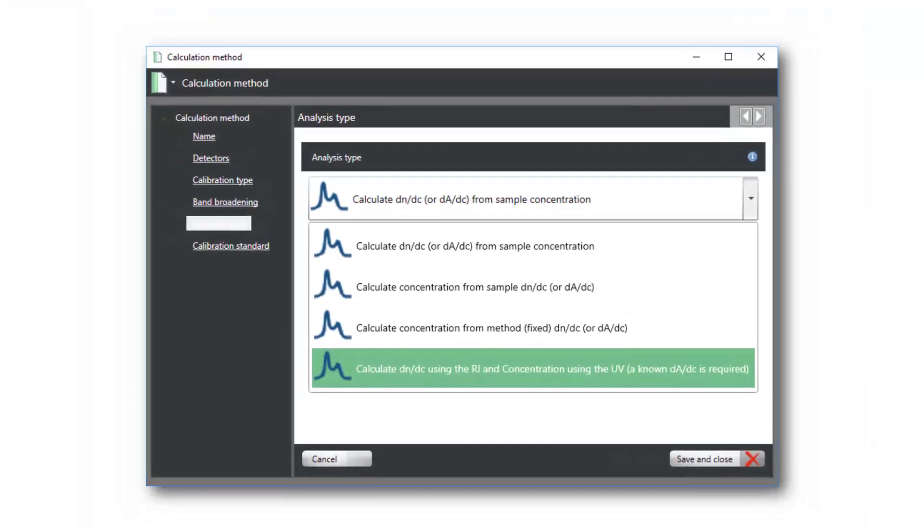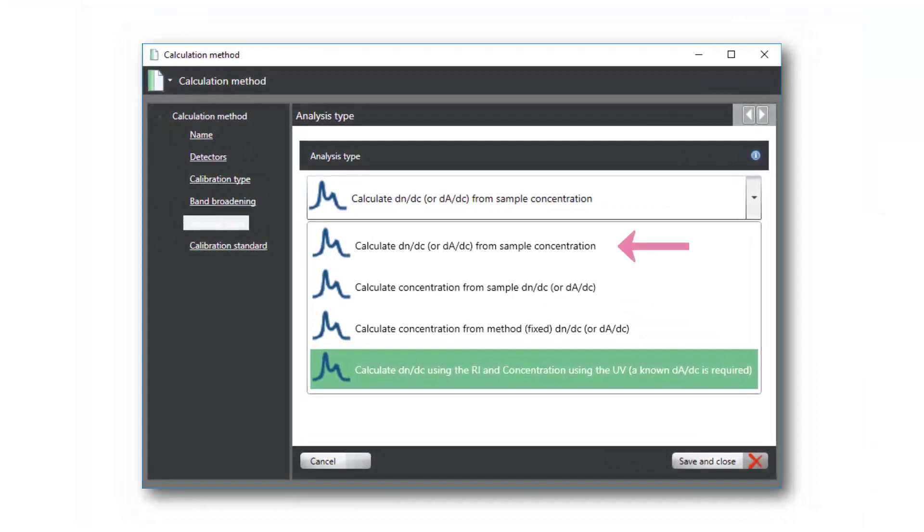The three analysis type options we'll focus on are Calculate DNDC from Sample Concentration, Calculate Concentration from Sample DNDC, and Calculate Concentration from Method or Fixed DNDC.